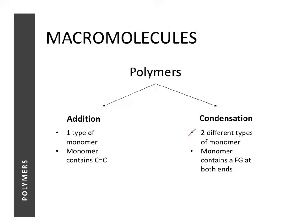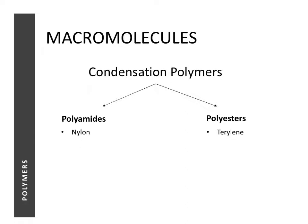For condensation polymers, there are certain unique features for their formation. Condensation polymerization involves two different types of monomers, and each monomer has a functional group at both ends of the monomer. There are essentially two kinds of condensation polymer we're going to learn: polyamides and polyesters.